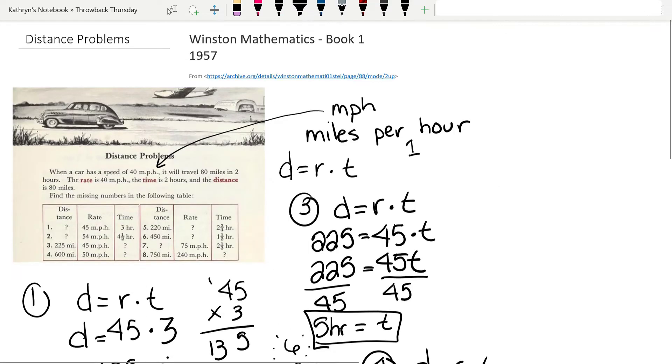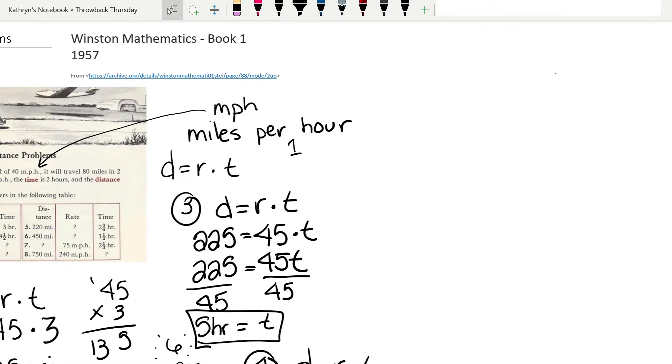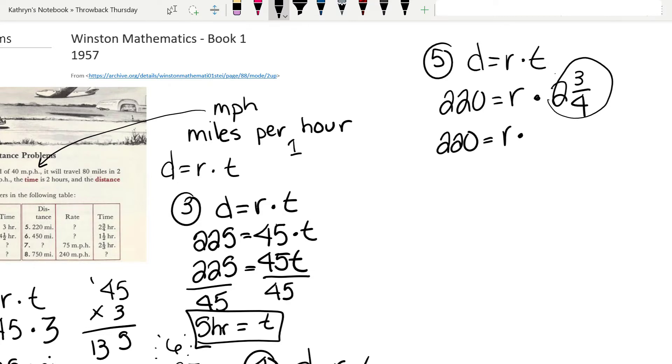Let's look at number 5. d equals r times t. They give us the distance as 220 miles. They don't give us their rate, so that's what we're going to have to look for. They give us the time as 2 and 3 fourths hours. Just like the other one, we're going to change this into an improper fraction. 4 times 2 is 8, plus 3 is 11. We're going to have 11 over 4.